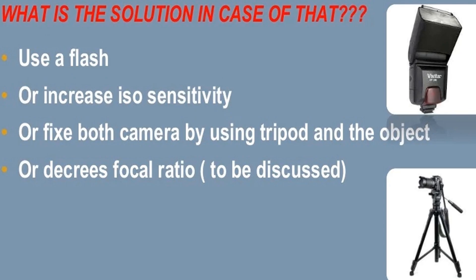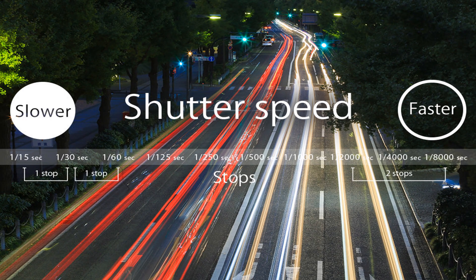Solutions for blur from low shutter speed: use a flash, increase ISO sensitivity, fix both camera and object using a tripod, or decrease the focal ratio. Aperture is a hole within a lens through which light travels into the camera body.